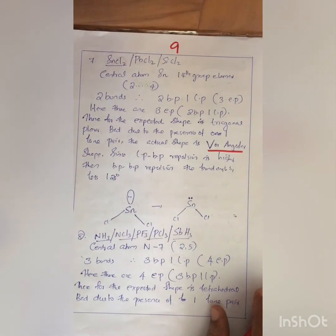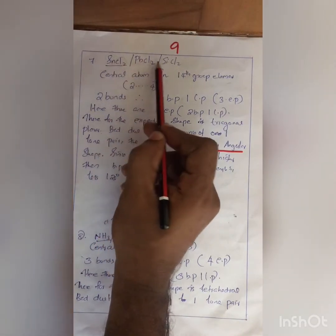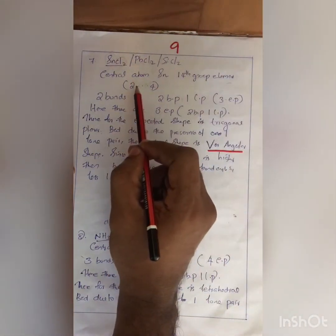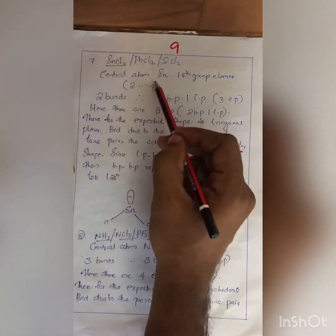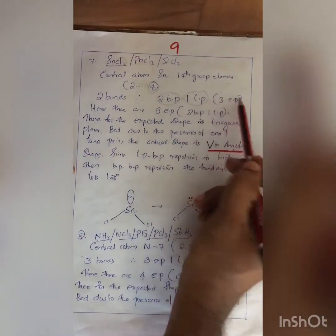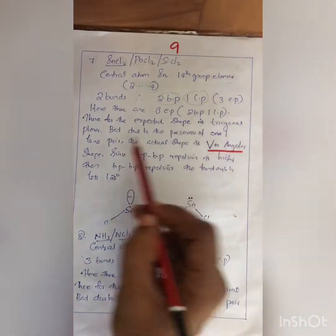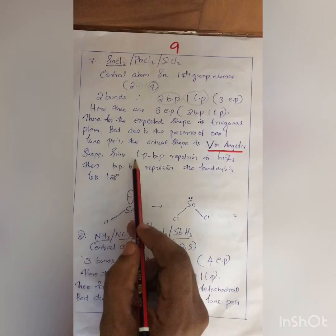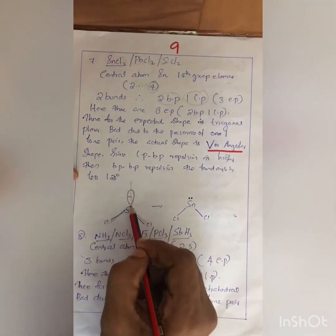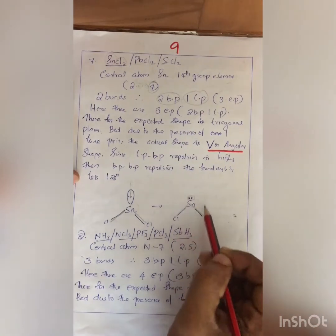The molecules discussed so far do not have lone pairs. Now let's discuss molecules with both bond pairs and lone pairs. For example, SnCl2, GeCl2, and SiCl2 — all belong to the 14th group with configuration 2,...,4. There are 2 bonds: 2 BP, with 2 remaining electrons forming 1 lone pair, giving 3 EP total. The expected shape is trigonal planar, but due to the presence of one lone pair, the actual shape is V-shape or angular. Since LP–BP repulsion is higher than BP–BP, the bond angle is less than 120 degrees.